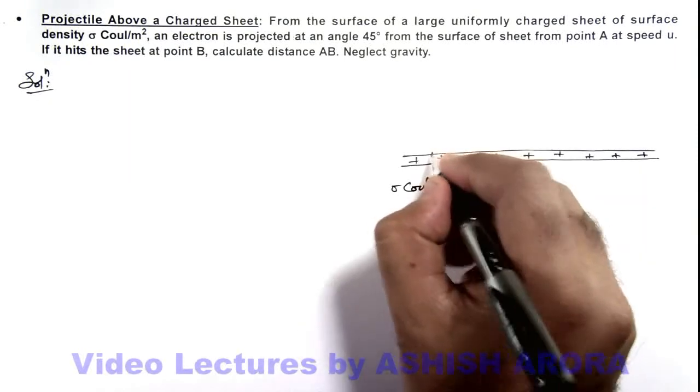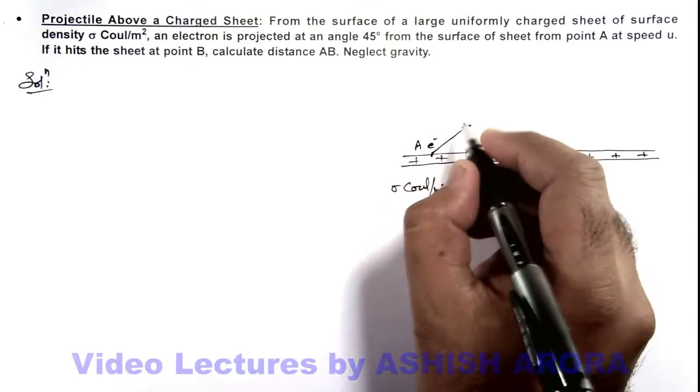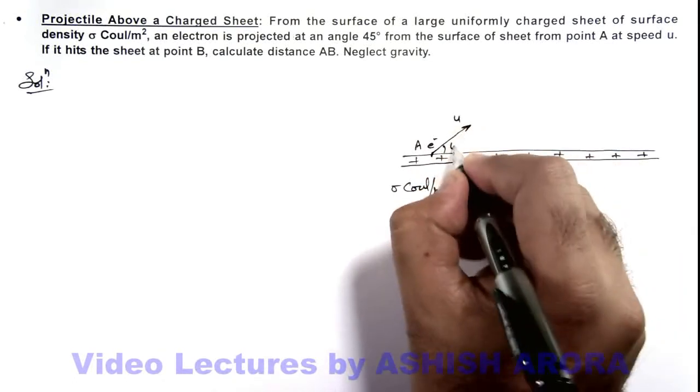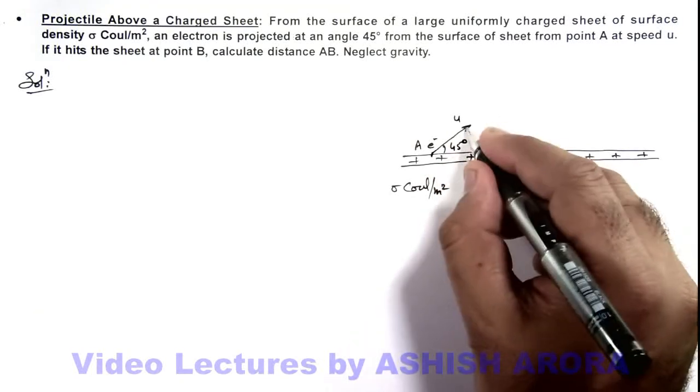From point A, an electron is projected with the initial speed u at an angle 45 degrees. In this situation, during the motion of this electron, it will follow a projectile motion.